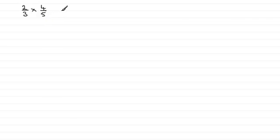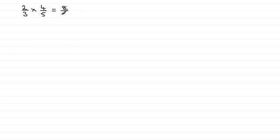Two-thirds times four-fifths. We should be familiar with what we do with something like this. We just multiply the numerators together and divide by the denominators multiplied together. So we've got two times four, which is eight, divided by three times five, which is fifteen — giving us eight-fifteenths.